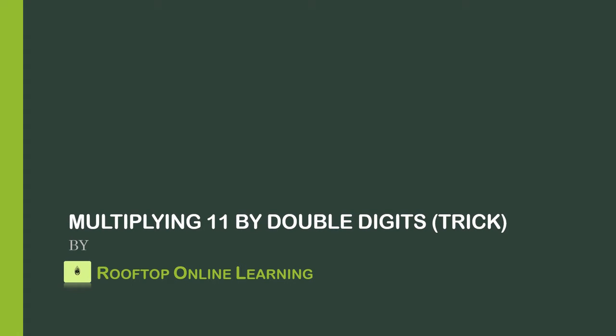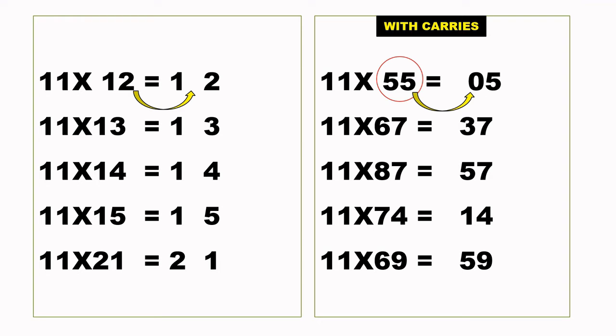Good day to you all. After the equal sign, I have rewritten the double digits we are multiplying by 11, leaving a space for another digit between them.